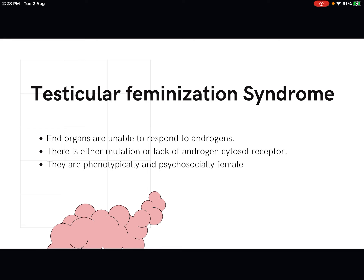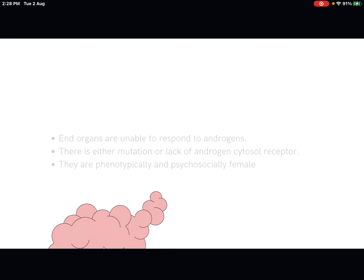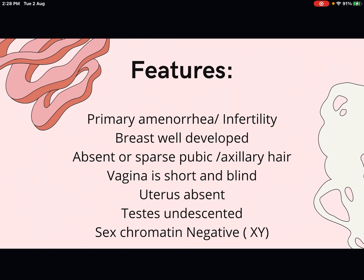Now let's see the features of these patients. They will have primary amenorrhea or infertility. The breasts will be well developed, but pubic or axillary hair will be absent or sparse. The vagina is short and blind-ended, the uterus will be absent, the testes will be present and mostly undescended, and the sex chromatin is negative.